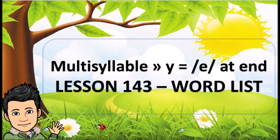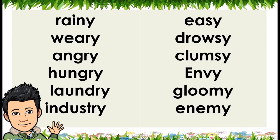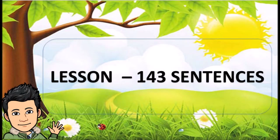Lesson 143, Word List: Multi-syllable, Y equals /E/ at end. Cloudy, Greedy, Candy, Sandy, Windy, Empty, Nasty, Fifty, Plenty, Twenty, Rainy, Weary, Angry, Hungry, Laundry, Industry, Easy, Drowsy, Clumsy, Envy, Gloomy, Enemy.